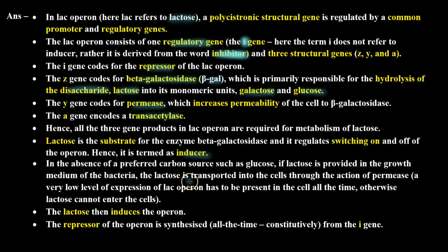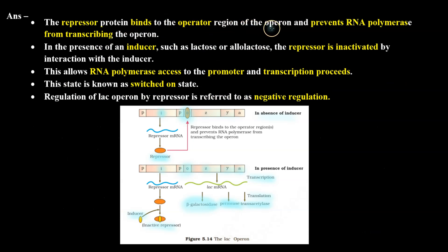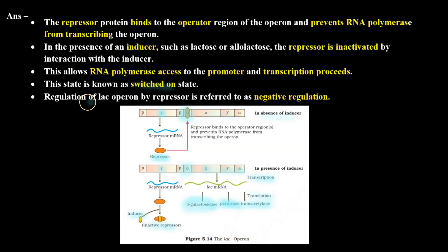Lactose is the substrate for the enzyme beta-galactosidase and it regulates the switching on and off of the operon; hence it is termed as the inducer. In the absence of a preferred carbon source such as glucose, if lactose is provided in the growth medium, lactose is transported into the cells through the action of permease. A very low level of expression of lac operon must be present in the cell at all times; otherwise lactose cannot enter the cells. The lactose then induces the operon. The repressor protein is synthesized constitutively from the i gene and binds to the operator region, preventing RNA polymerase from transcribing the operon. In the presence of an inducer such as lactose or allolactose, the repressor is inactivated by interaction with the inducer, allowing RNA polymerase access to the promoter and transcription proceeds — this is the switched-on state. Regulation of lac operon by repressor is referred to as negative regulation.